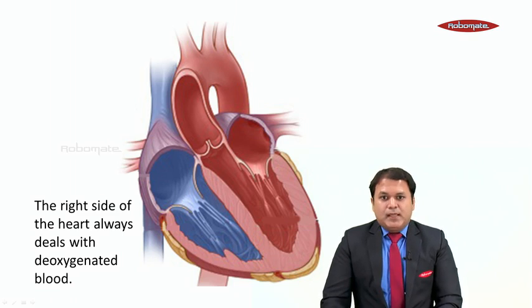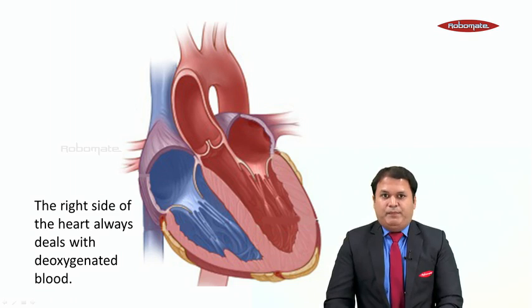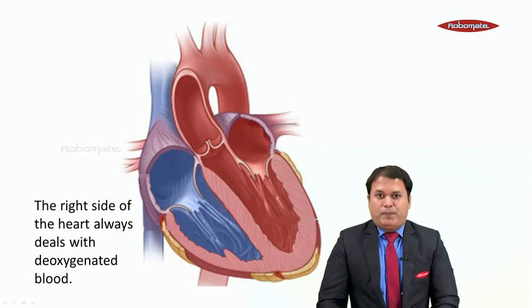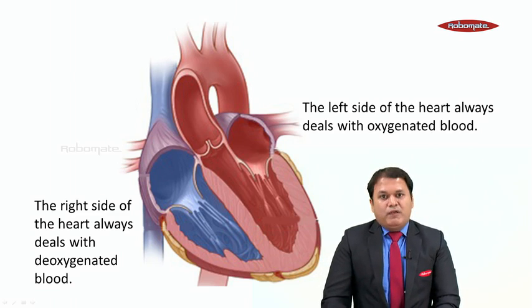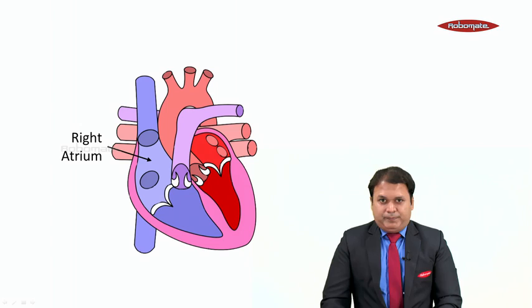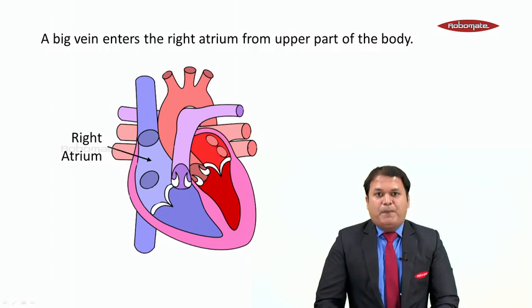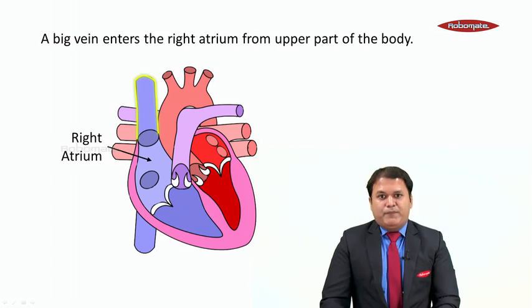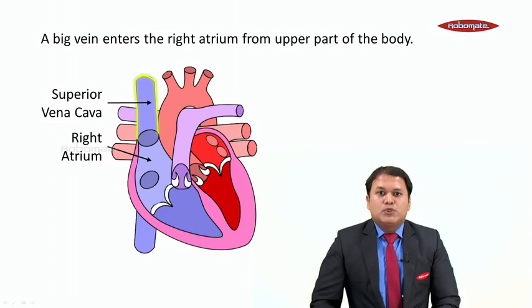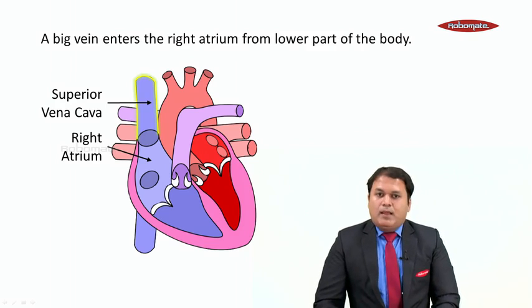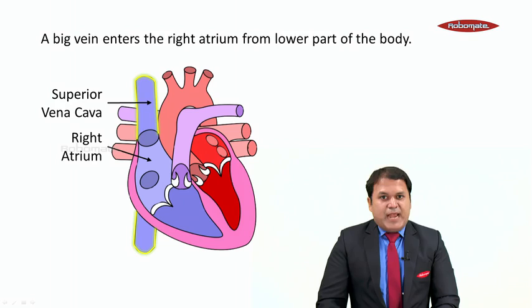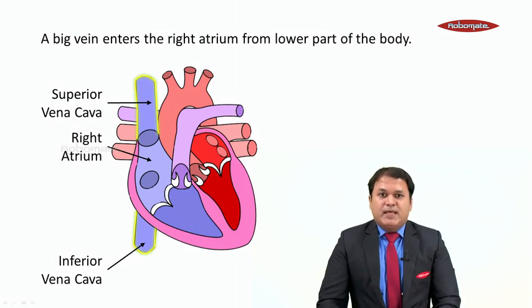Now one very important thing to notice: the right side of the heart always deals with deoxygenated blood, that is impure blood. And the left side of the heart always deals with oxygenated blood, that is pure blood. This is the right atrium. A big vein of the body enters the right atrium from the upper part of the body, as you can see. This big vein is called as the superior vena cava — superior because it comes from the upper part of the body. Similarly, a big vein enters the right atrium from the lower part of the body, and this vein is called as the inferior vena cava.